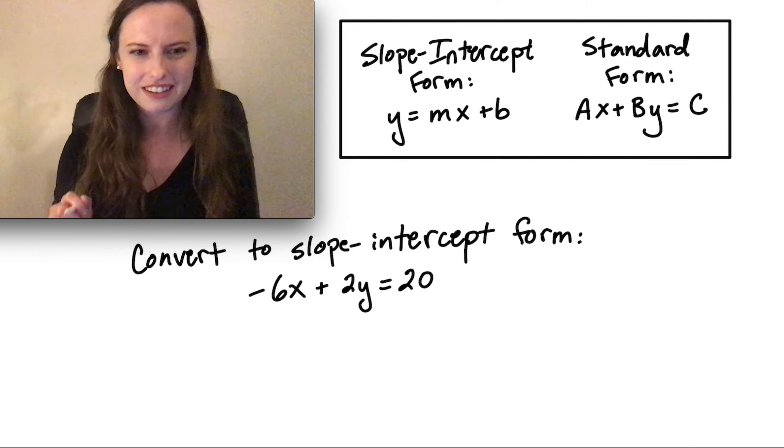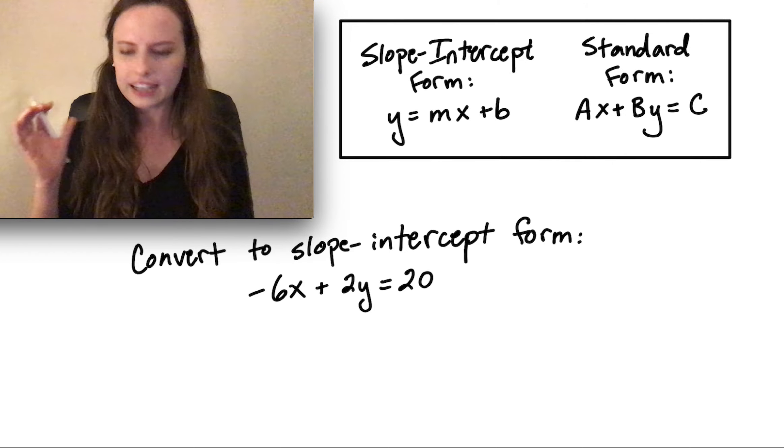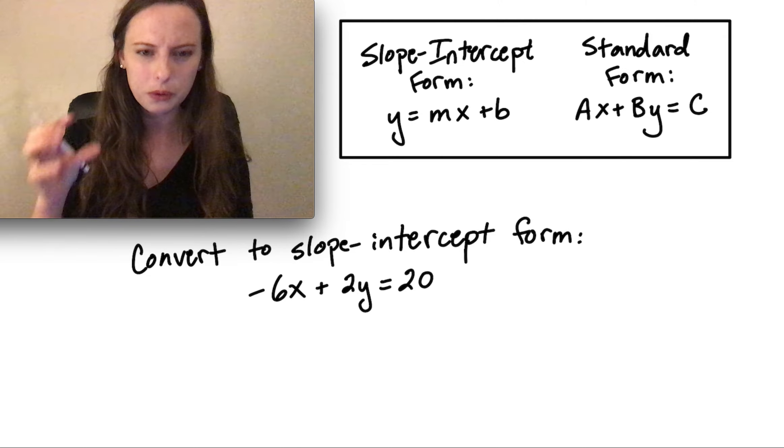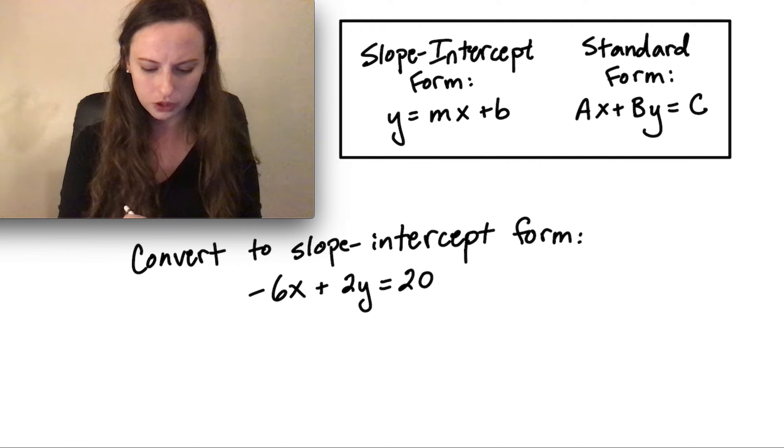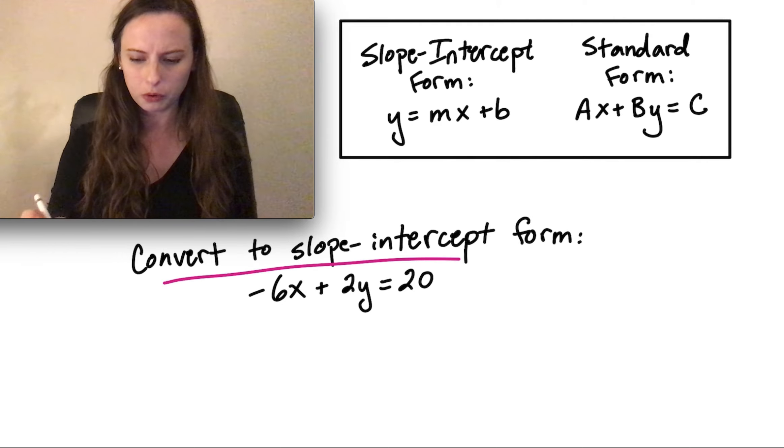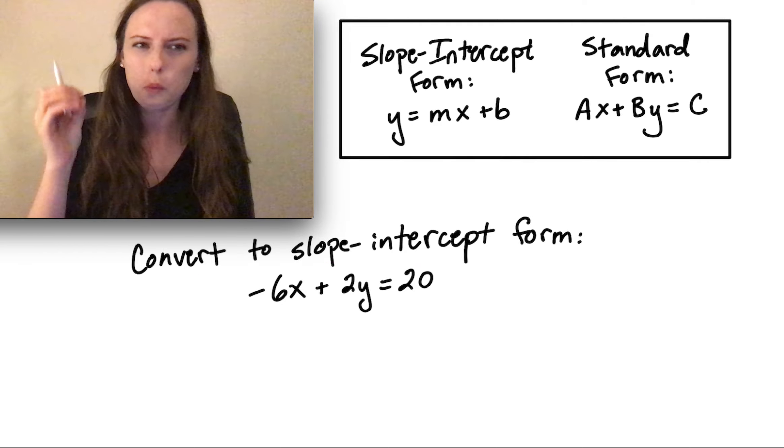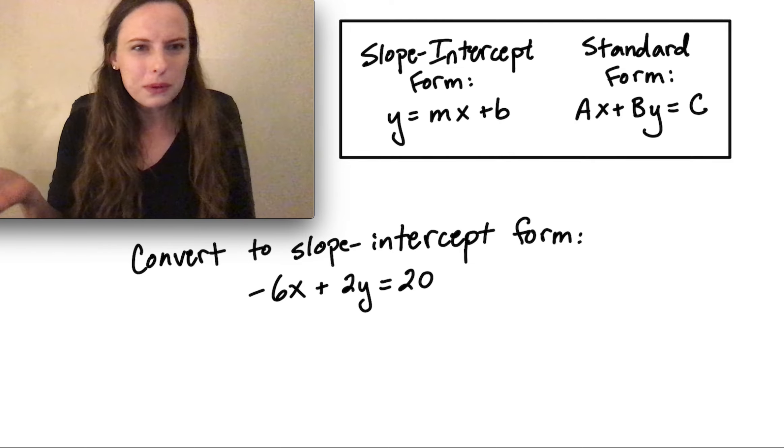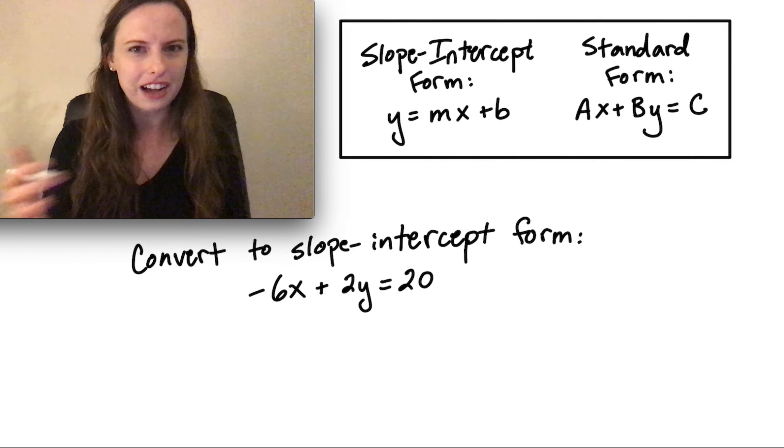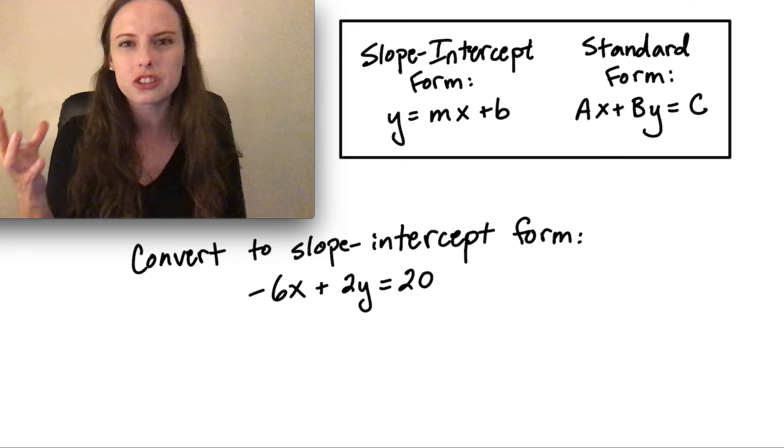Let's just dive into this first example here. The main thing that we want to do, the only thing you need to remember when converting to slope-intercept form is to get y by itself. That's the key. The way we do this is just by using algebra steps like we would if we were solving for y.